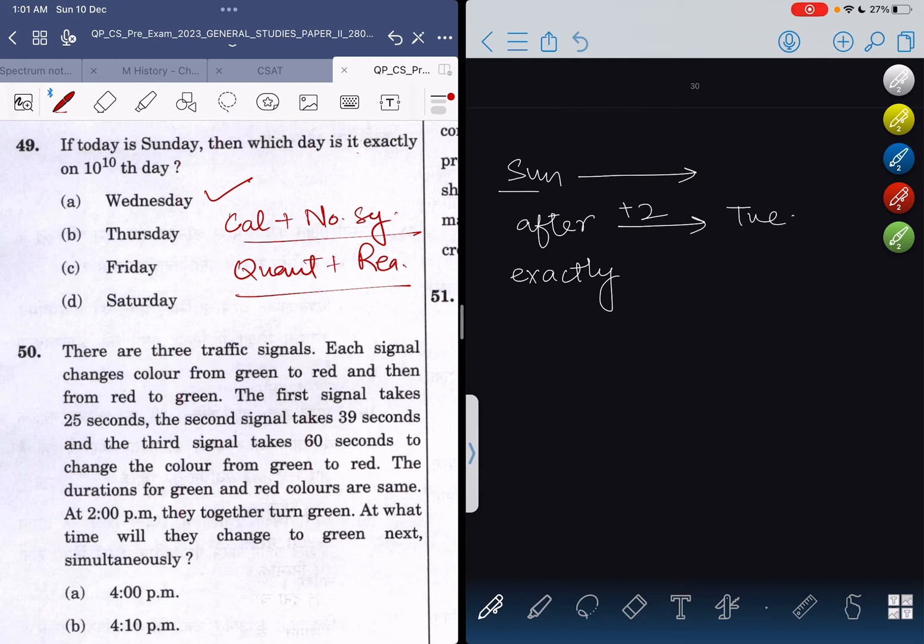But if I say today is Sunday and which day will be ON the second day, the answer will be Monday, because the first day is Sunday and the second day is Monday.